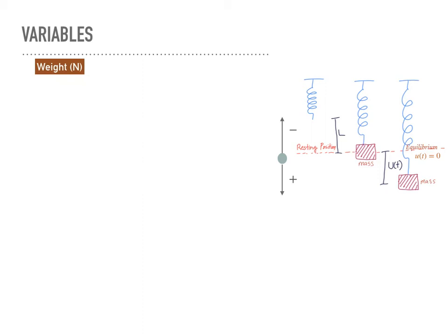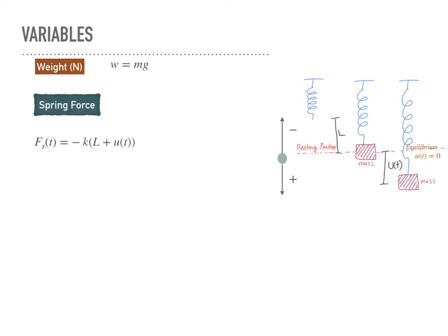The first variable in the system is the weight of a mass, which equals m times g, where g is gravity. Then we have spring force, which is the force produced by the spring and depends on the spring's material. In the spring force, we have a spring constant, positive constant k.